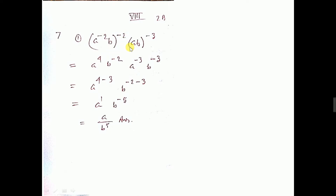Then b to the power minus 2, a to the power minus 3, and b to the power minus 3. Now same base — a and a — so the powers should be added: 4 plus minus 3, that is 4 minus 3. And b to the power minus 2 plus minus 3, that is minus 5.